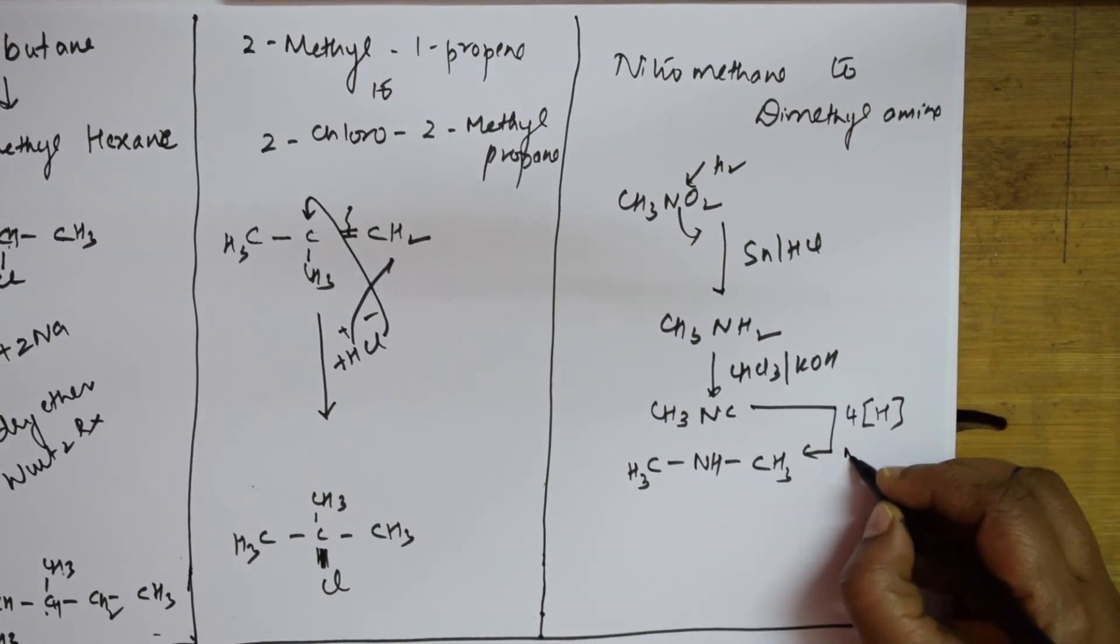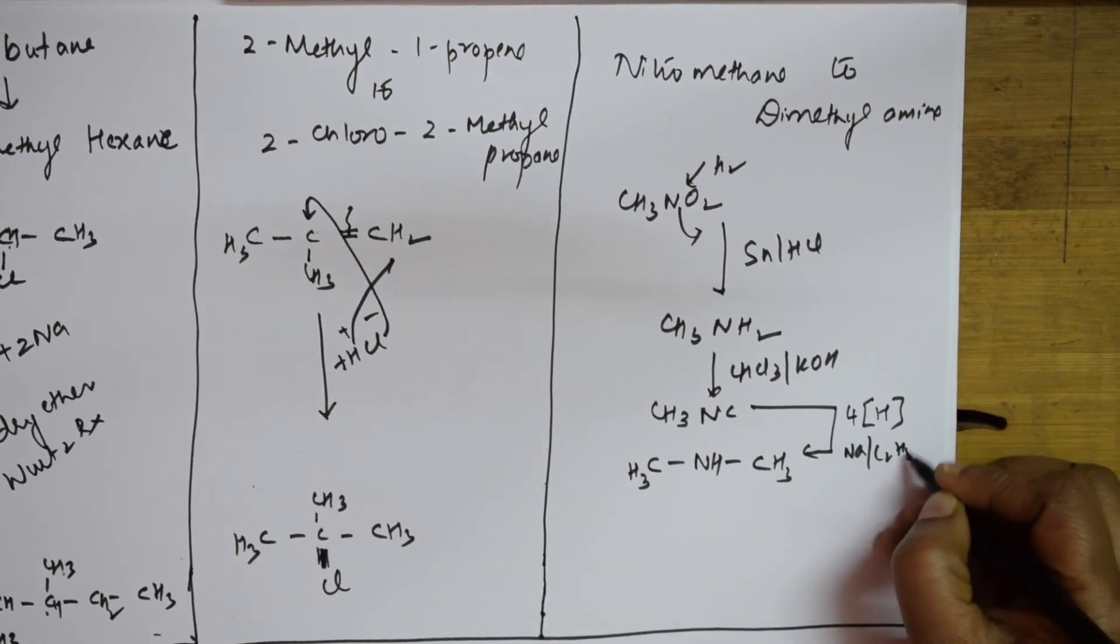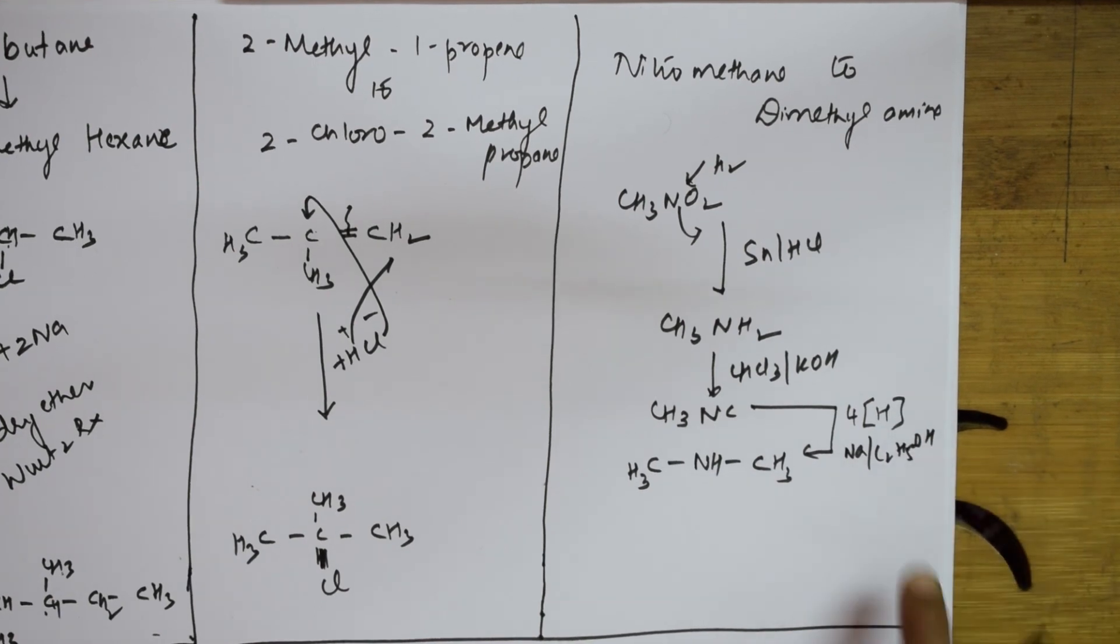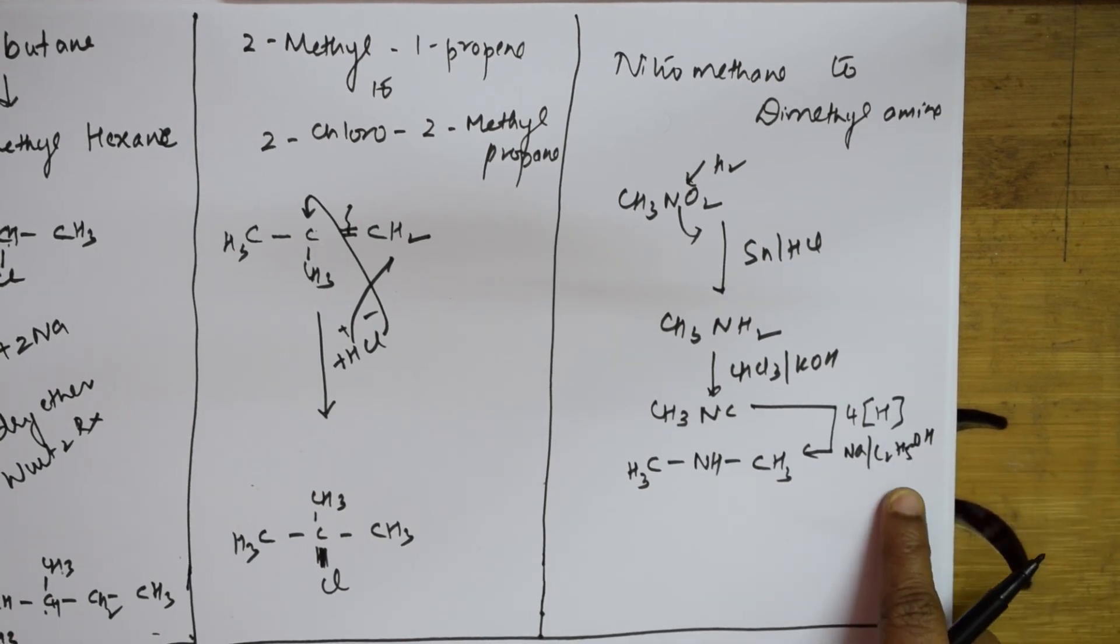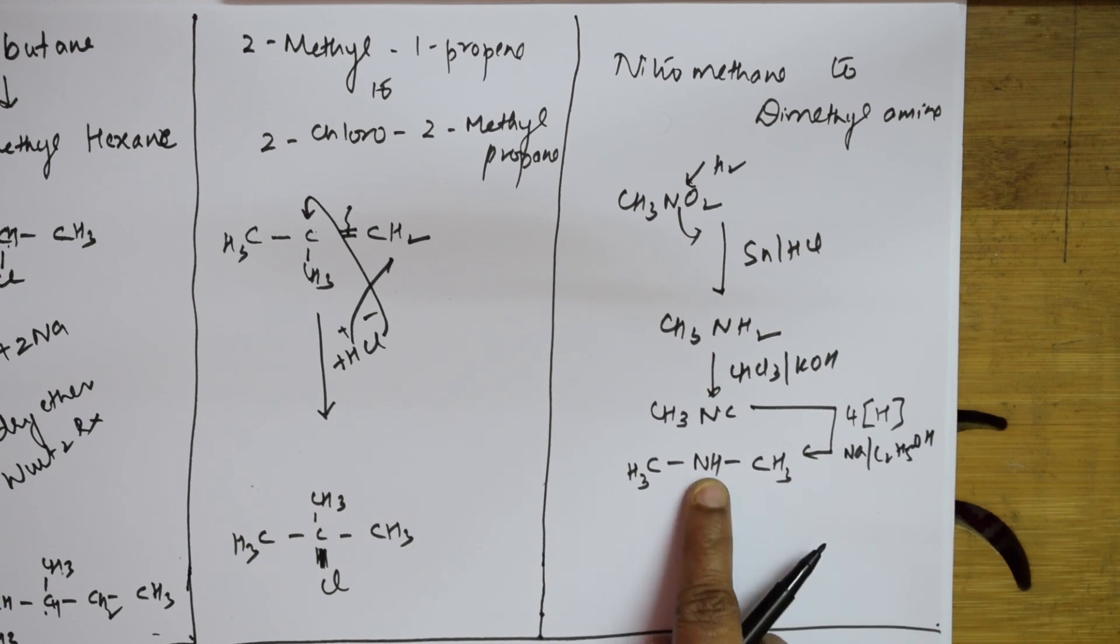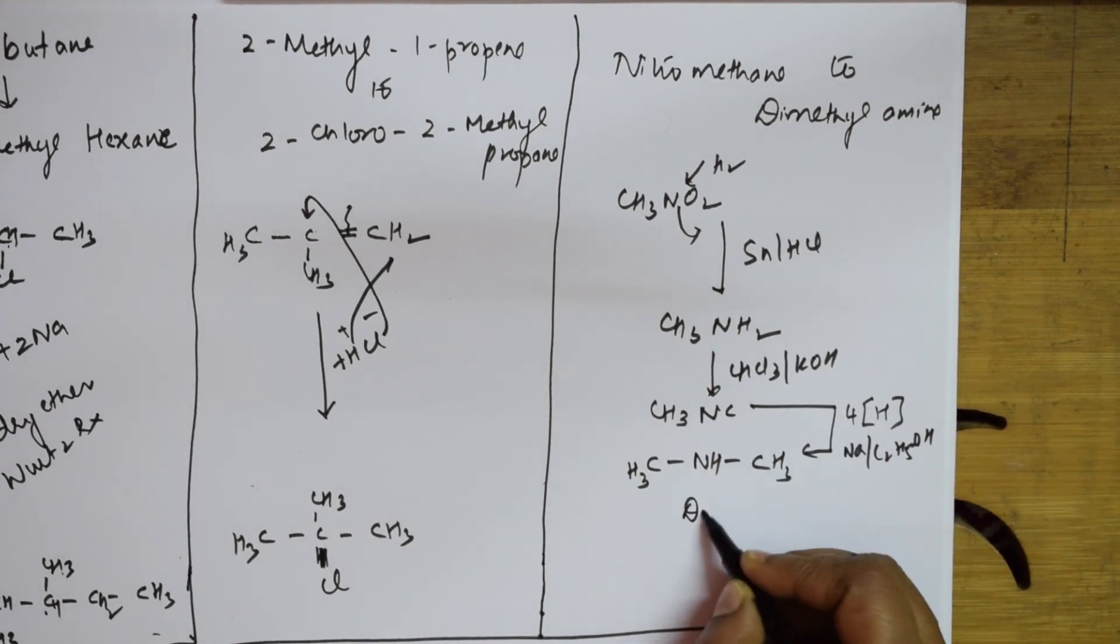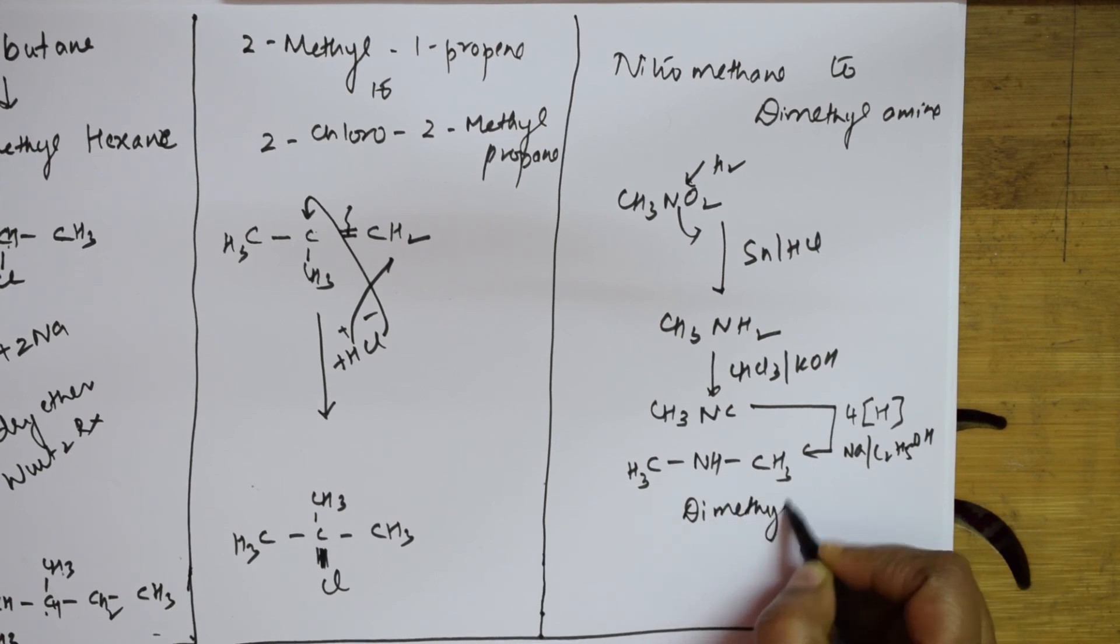Now what should I do? I need to add how many hydrogens? Four - one here and three here. So four hydrogens I can add in a reduction process. Which one can I use? Sodium in the presence of ethanol to convert. Then immediately that gets converted: one hydrogen adds here, three hydrogens add here, and this becomes dimethylamine.